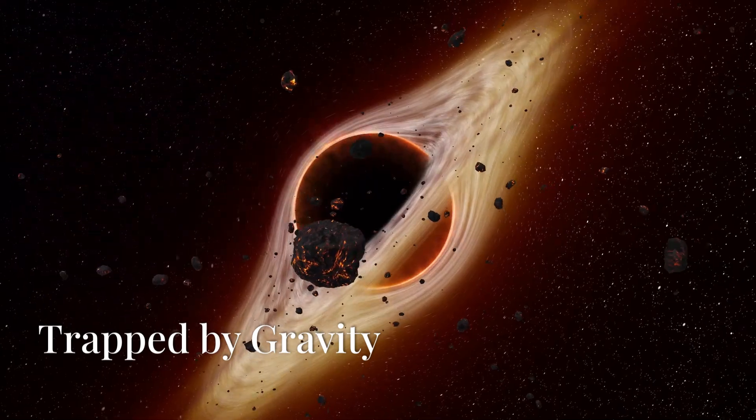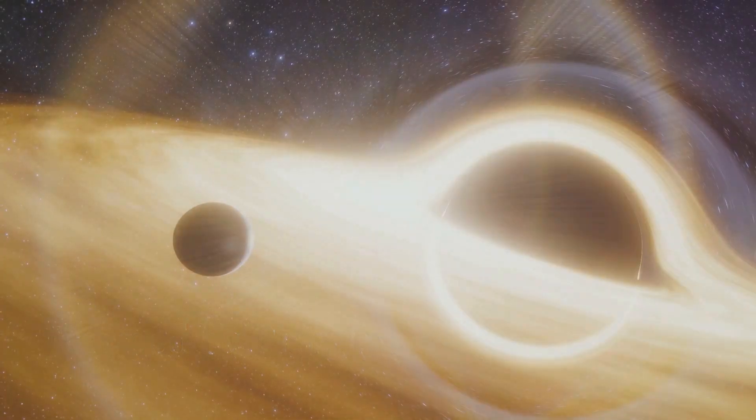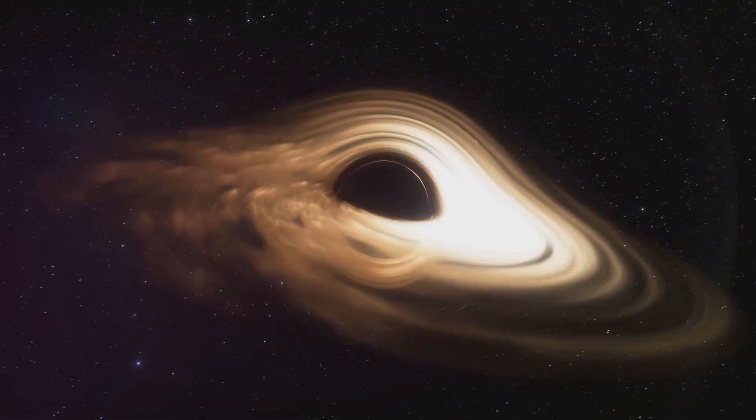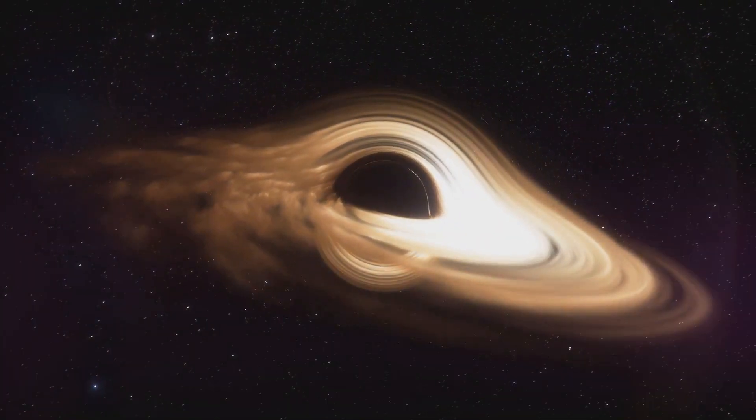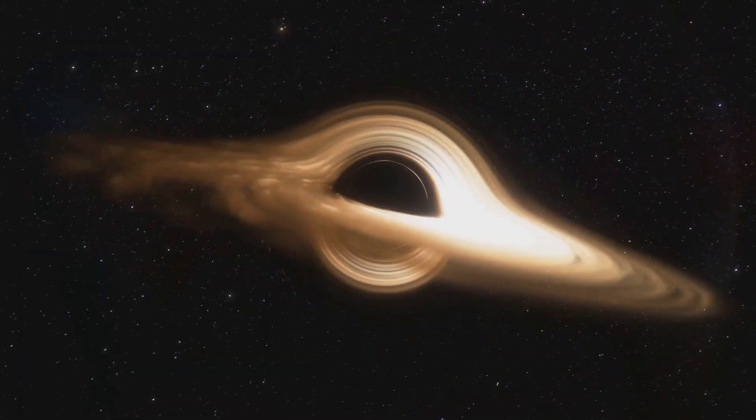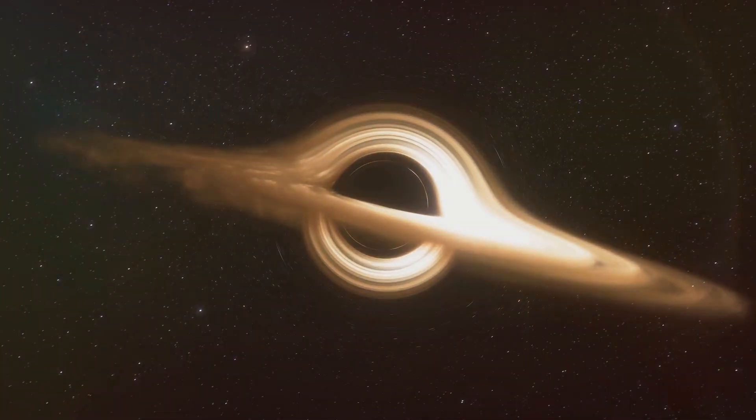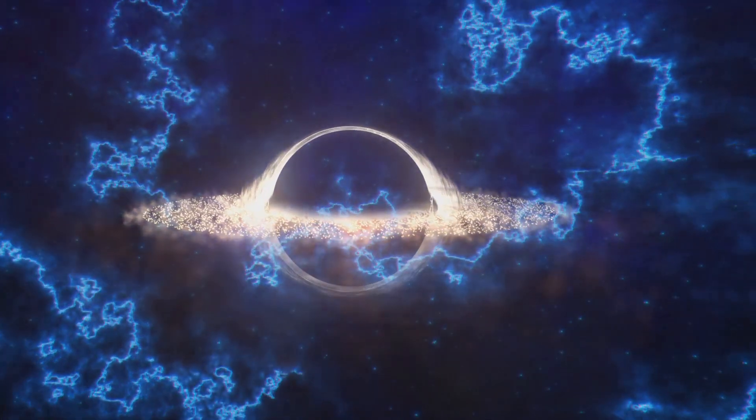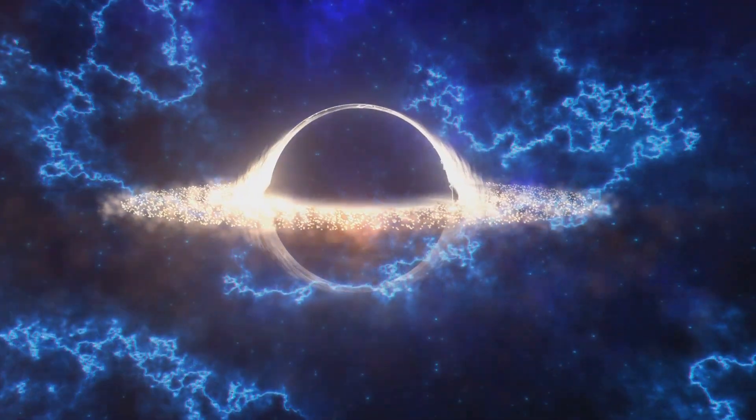If black holes are invisible, how do we know they exist? We observe their effects on their surroundings. For example, if a star gets too close to a black hole, its gas can be pulled away, forming a swirling disk of hot material called an accretion disk. This disk can emit intense radiation, which our telescopes can detect.